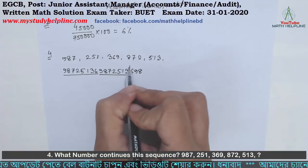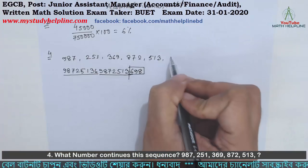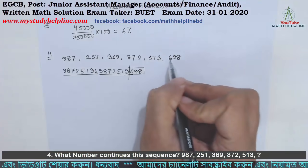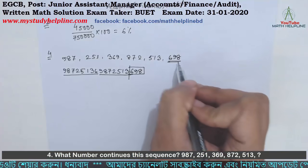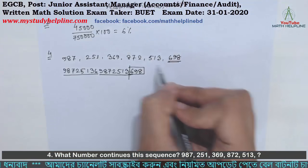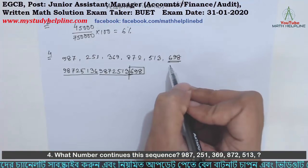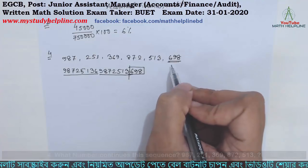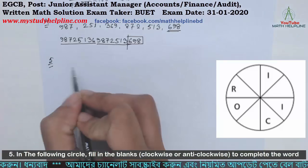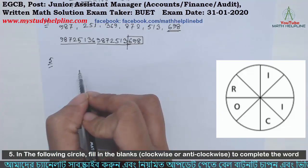This is three digits. The answer is 698. Number 5 is 698.